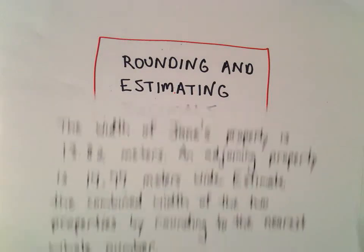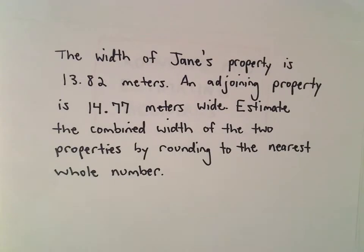All right, so just one more example here using a little bit of estimation. The width of Jane's property is 13.82 meters and then an